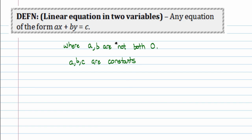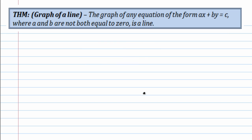We'll recall from last lecture that a linear equation in two variables is an equation of the form ax plus by equals c, where a, b, and c are all constants, and a and b are not both zero at the same time — one of them could be zero, but not both. Also, the graph of any linear equation is going to be a line. It's linear because the powers on the variables x and y are actually one, and that forces it to graph as a line.